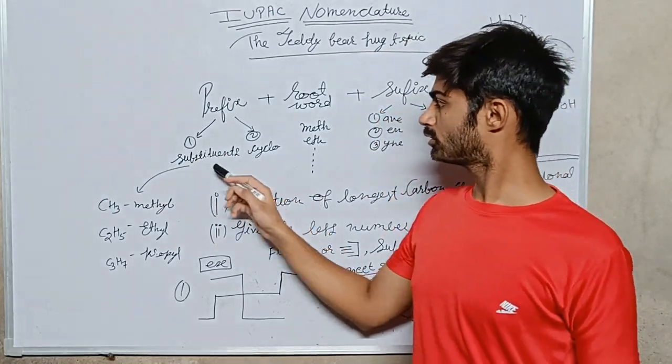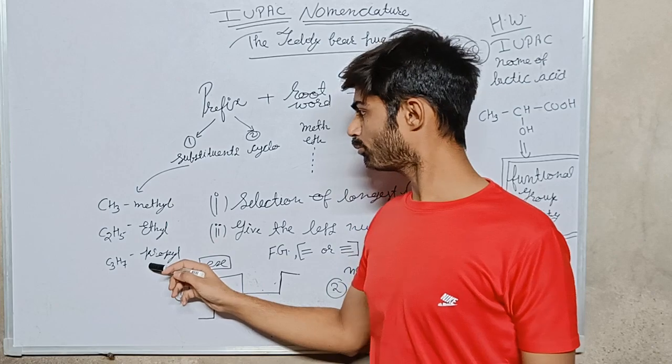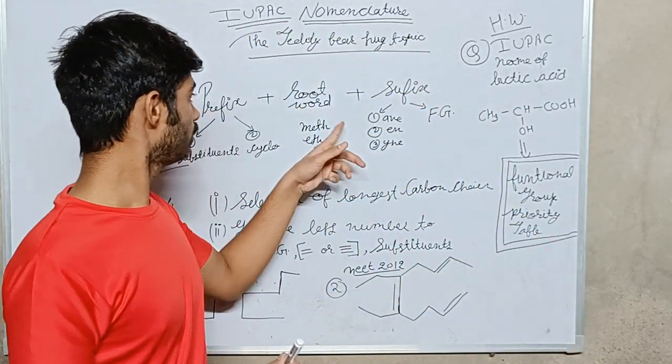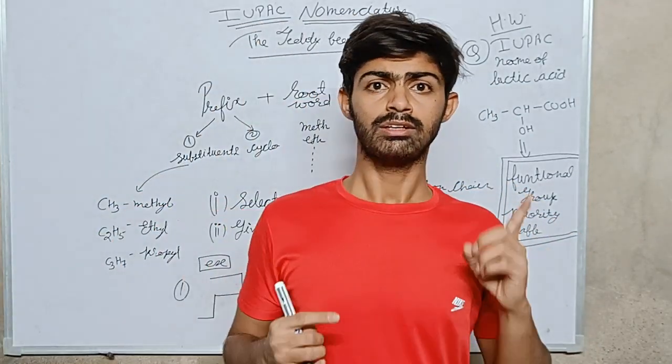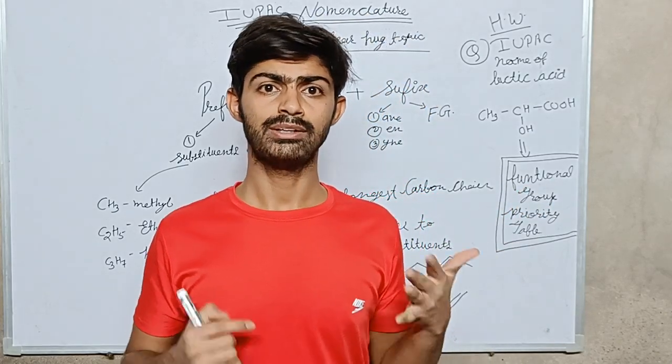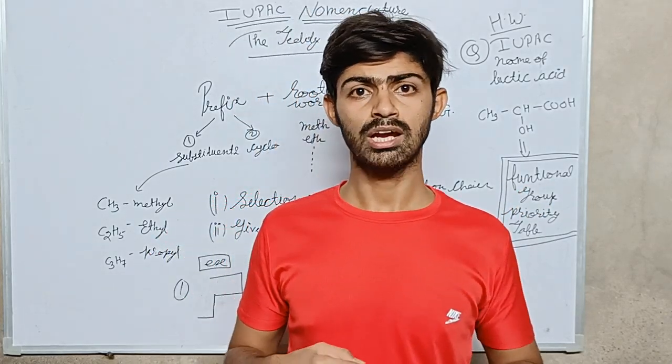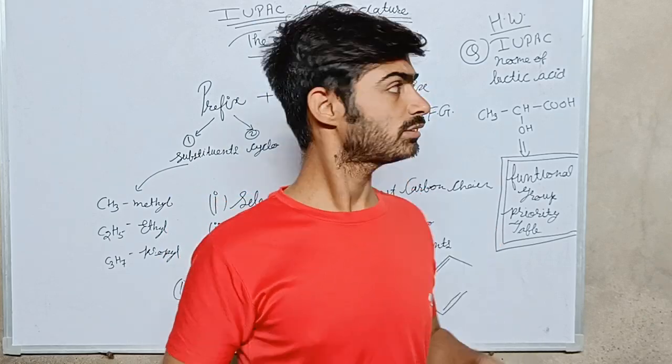Substituents include methyl, ethyl, propyl. Root words are: meth, eth, prop, but, pent, hex, hept, oct, non—just like you learned in your 10th class.